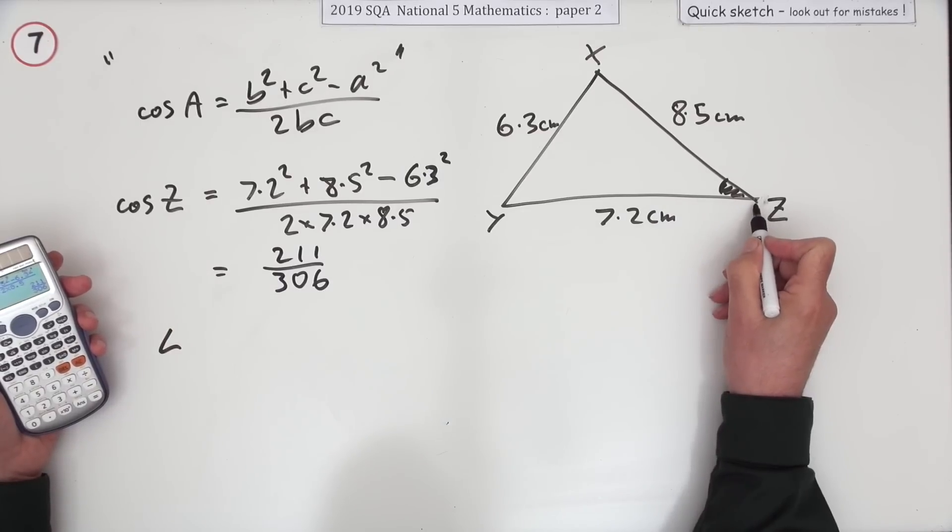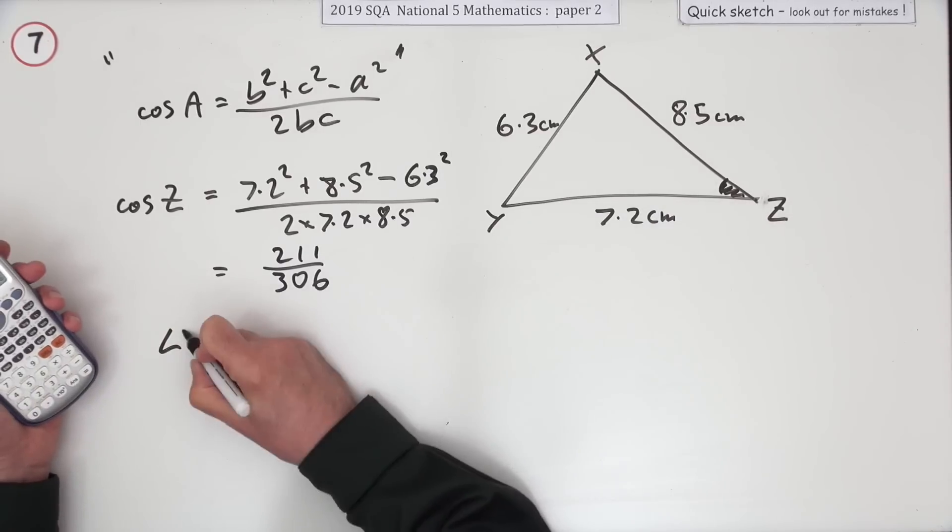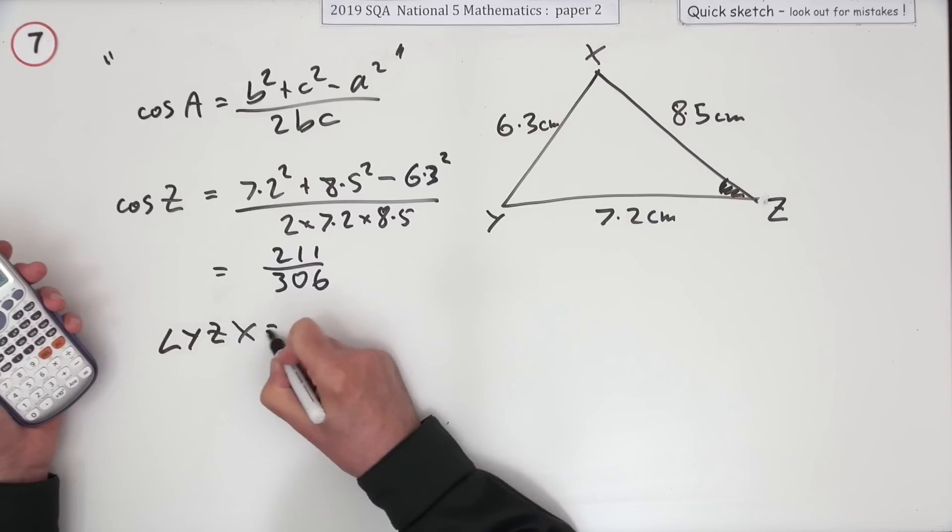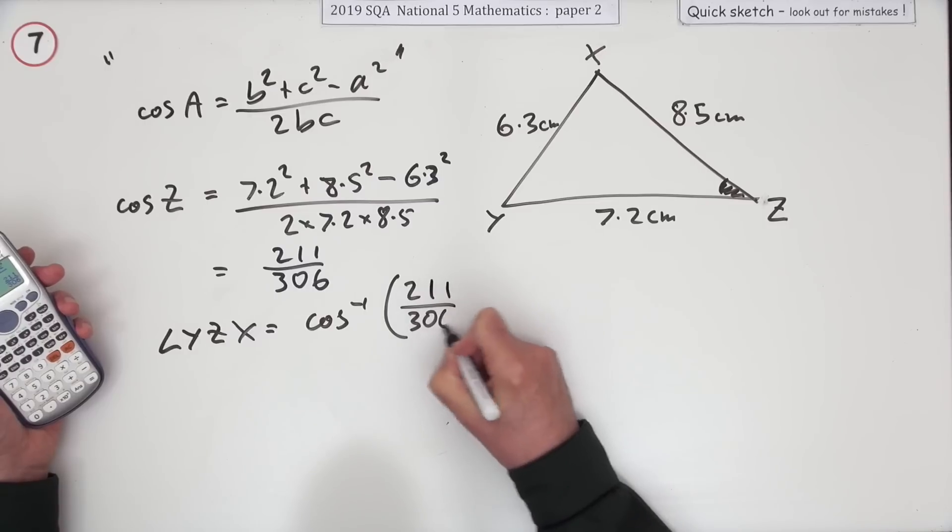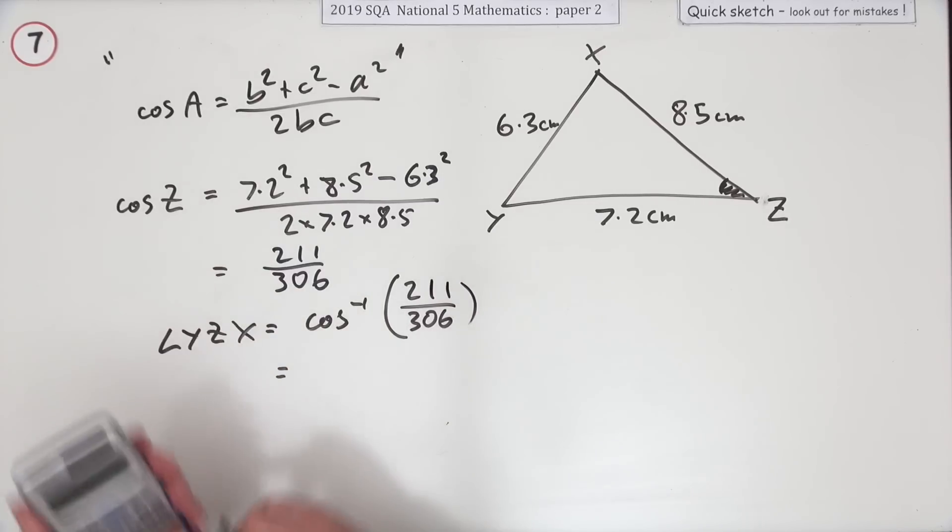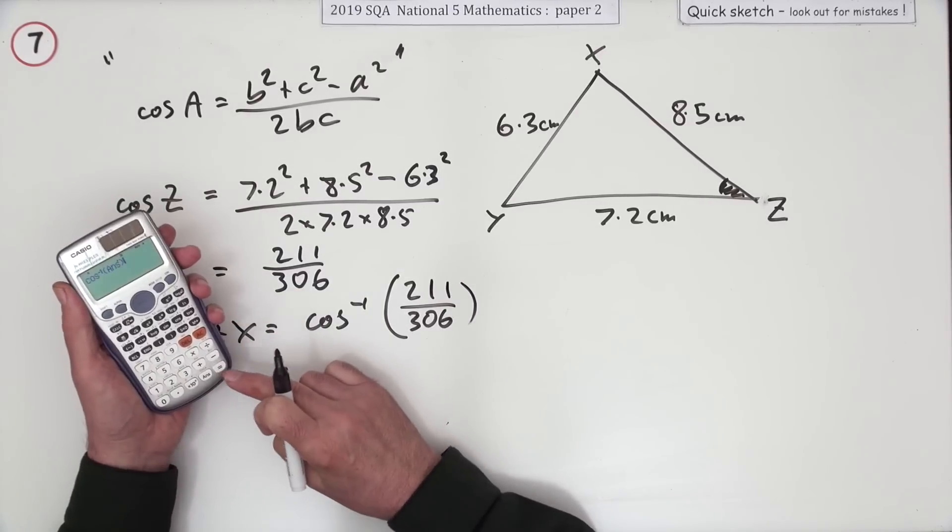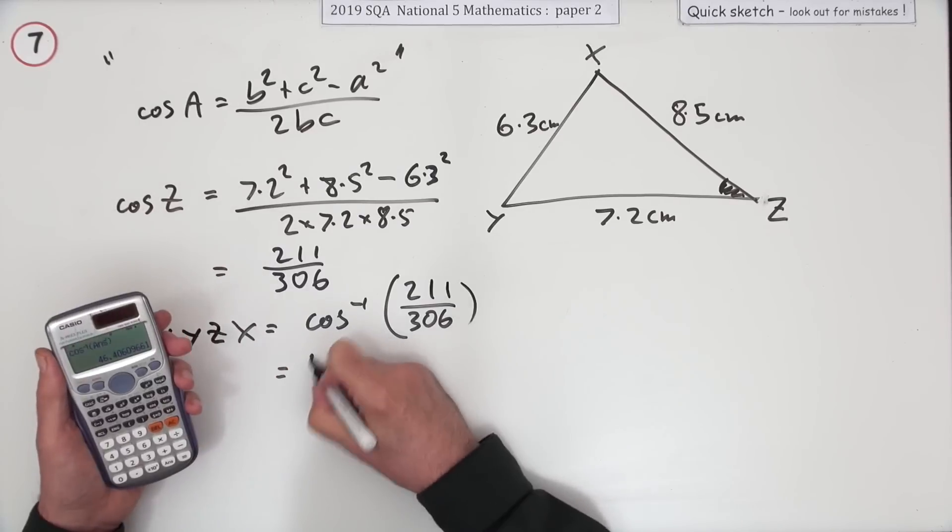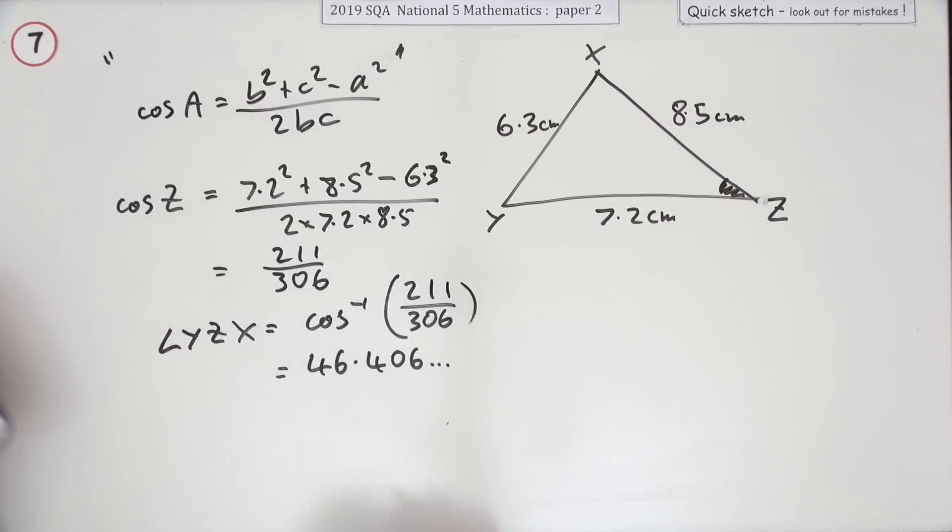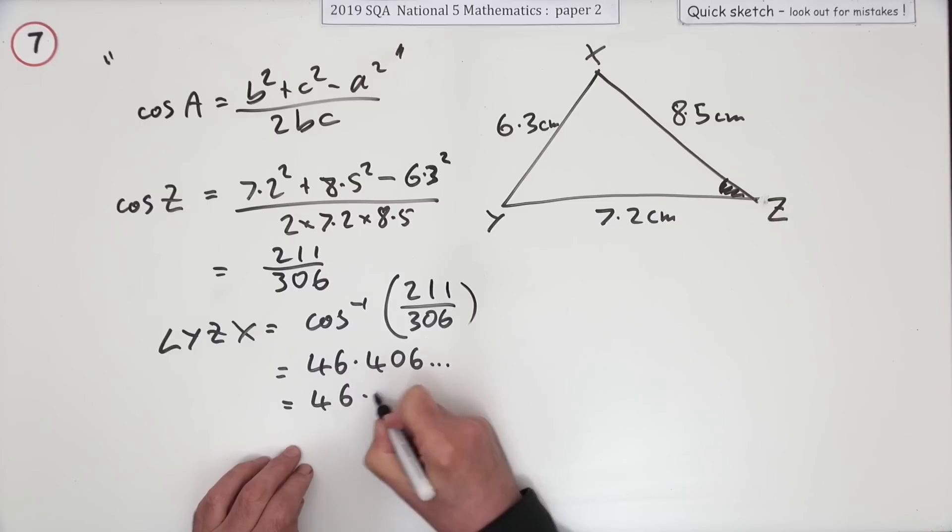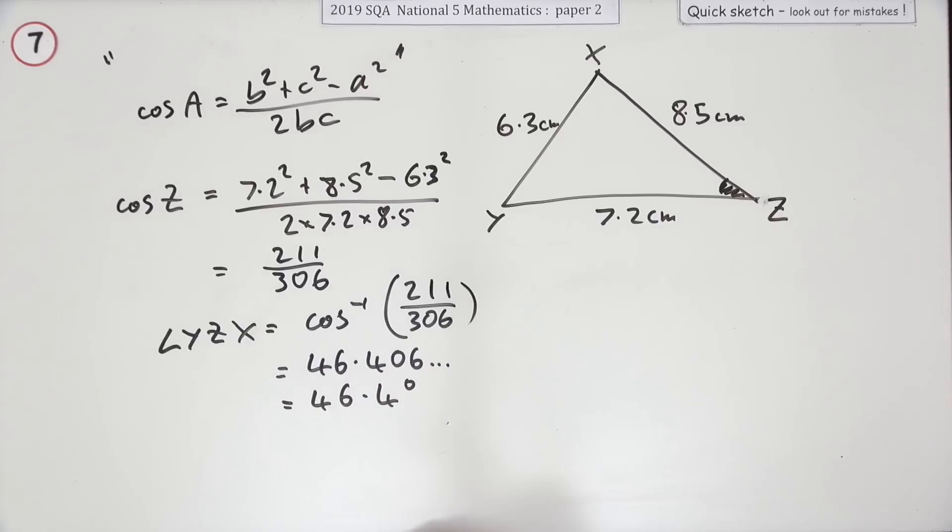I'm going to put it down properly now. The smallest angle is the one at z. I'm going to say angle y, z, x, just in case. It's going to be the inverse cos of 211 over 306. Just putting that in, using the answer function gives me 46.406 and so on. It doesn't mention an accuracy, so I'll go for one decimal place. That's 46.4 degrees.